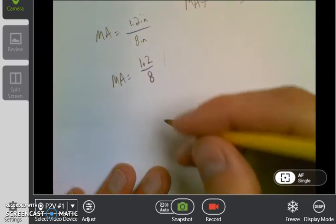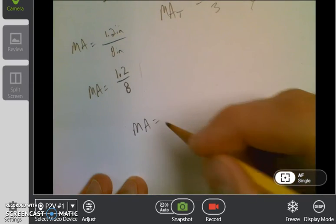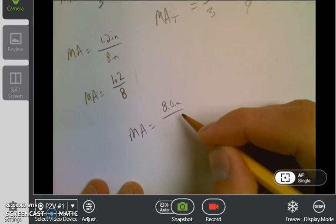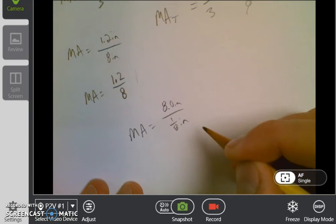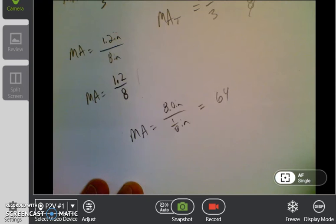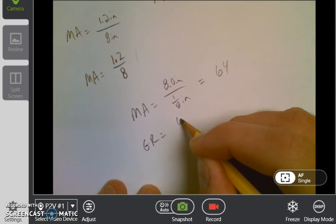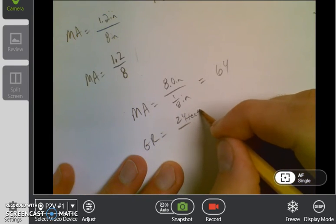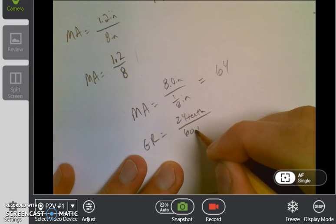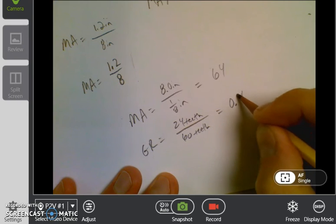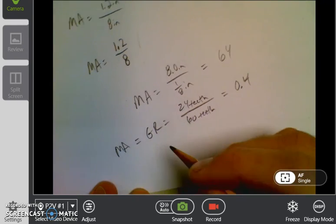So we're going to have three mechanical advantages here. The first one is going to be 8 inches, because that's where the effort is located, that's the diameter of that effort arm, divided by an eighth of an inch. So that's the mechanical advantage of the first wheel and axle, which is 64. Then you have your gear ratio, which is 24 teeth over 60 teeth, and that gives you a value of 0.4. So that's your mechanical advantage of that section.